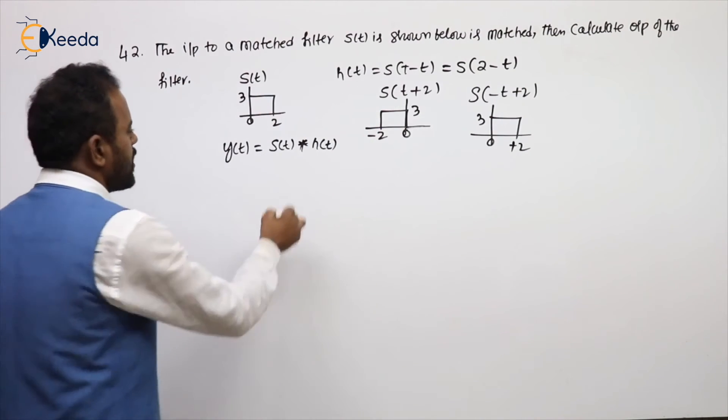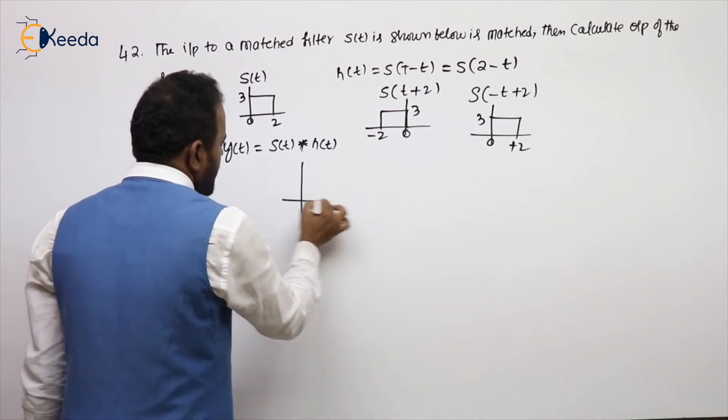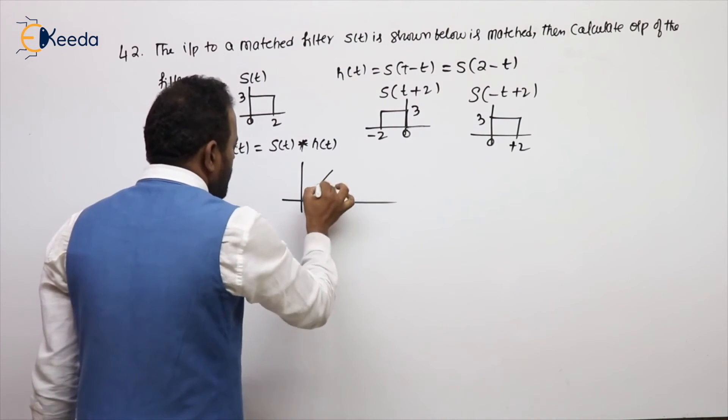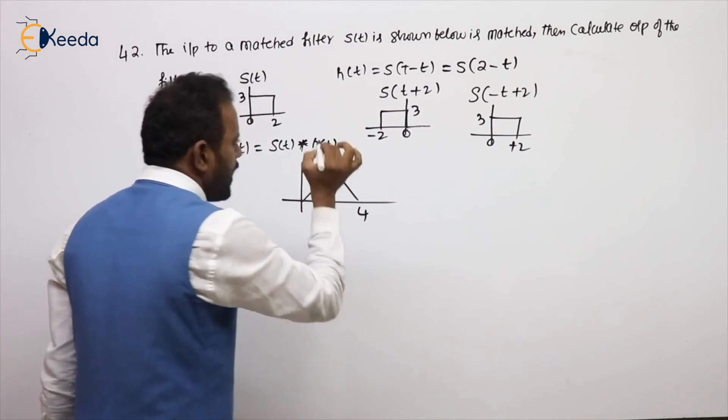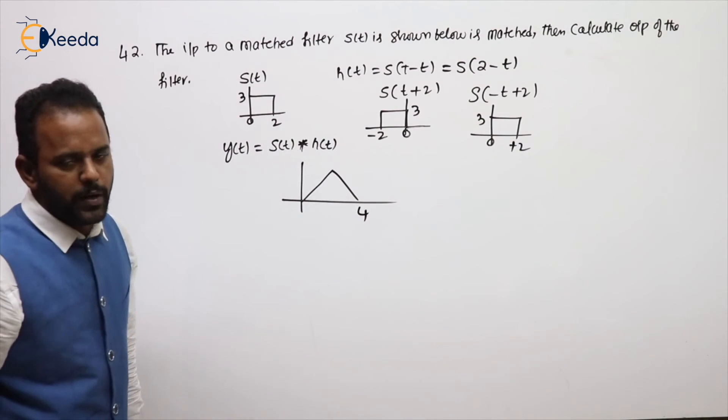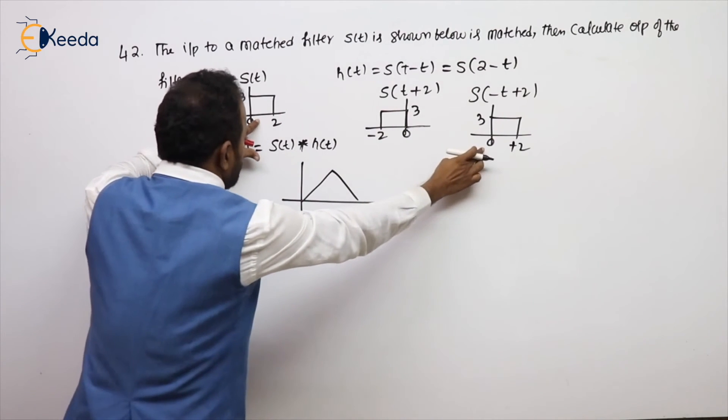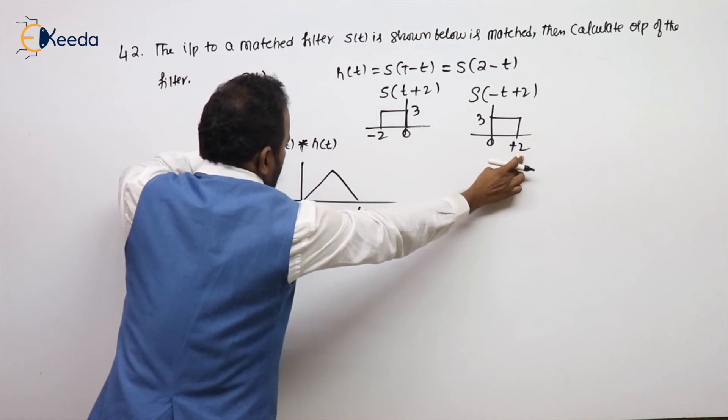Convolution of two rectangular pulses of equal width is a triangular pulse. Lower limit is equal to sum of the two lower, upper limit is equal to sum of the two upper. Lower limit means leftmost point, upper limit means rightmost point.